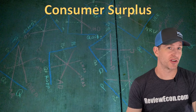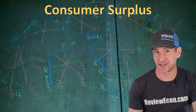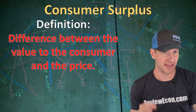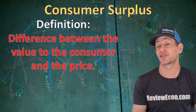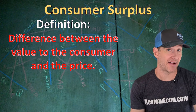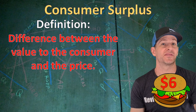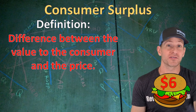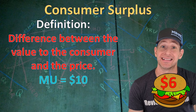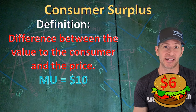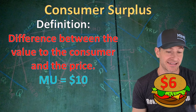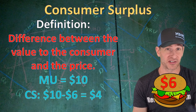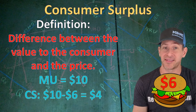As a consumer, consumer surplus is extremely important to me. The definition of consumer surplus is the difference between the value of the product to the consumer and the price they have to pay. Let's say that the price of a cheeseburger is $6 and my marginal utility for that cheeseburger is $10. I value it at $10 but it costs $6 — the difference between the two is $4 worth of consumer surplus if I buy that cheeseburger.